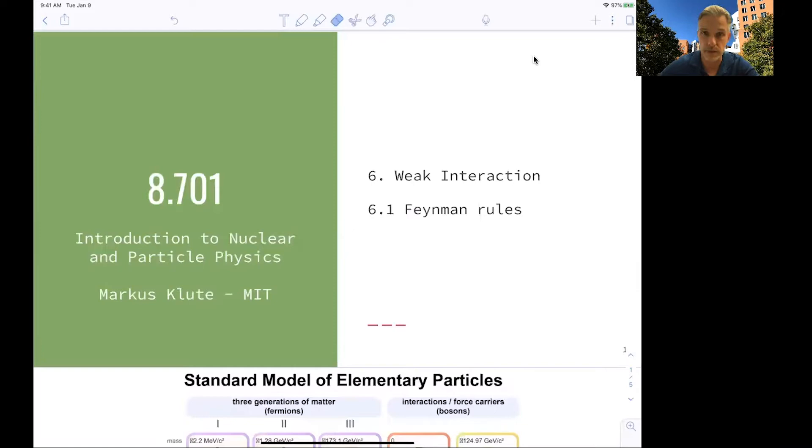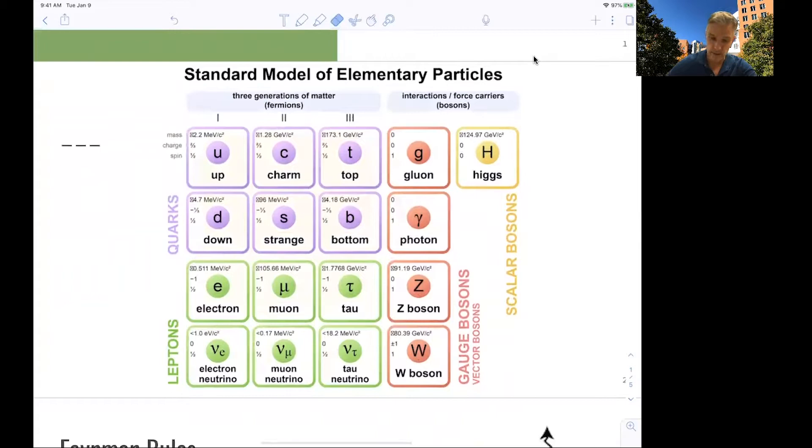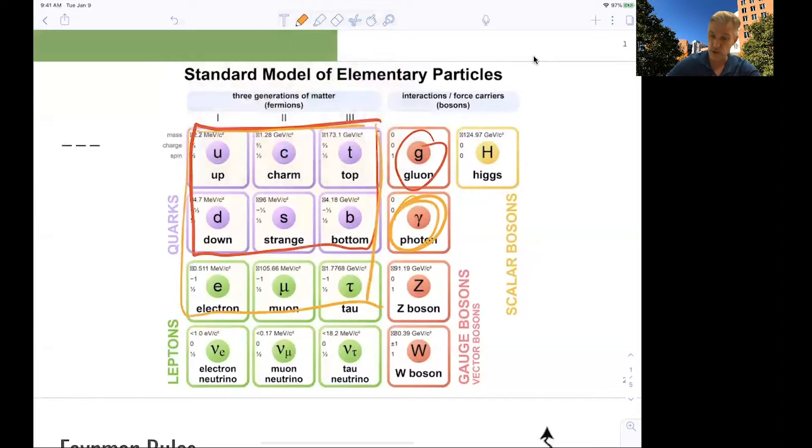Let's have a look at the standard model. We discussed gluons and QCD, and we saw that gluons couple to themselves and also to all quarks because they carry a color charge. We have also discussed the photon and seen that photons do not couple to themselves, but they couple to all charged elementary particles, the fermions. The photon also couples to the W boson because it has electrical charge.